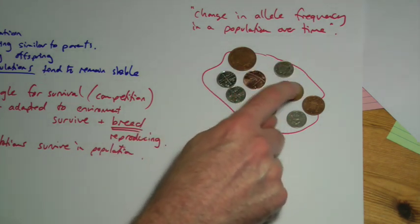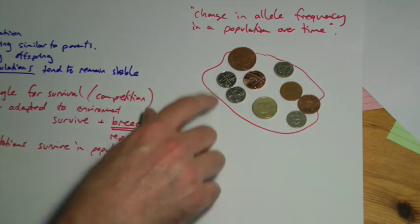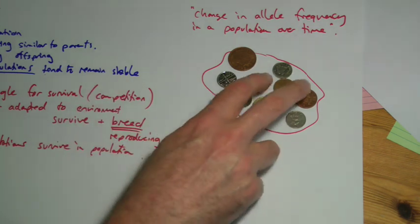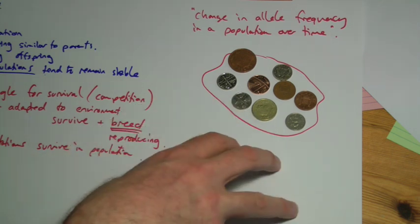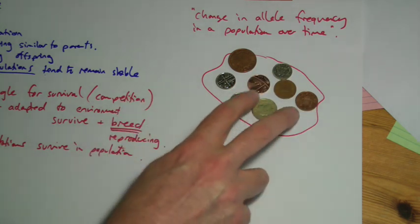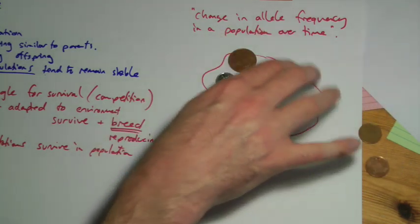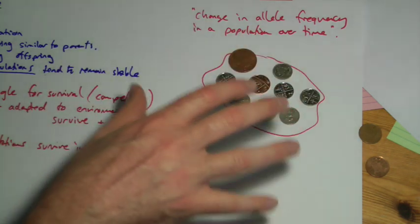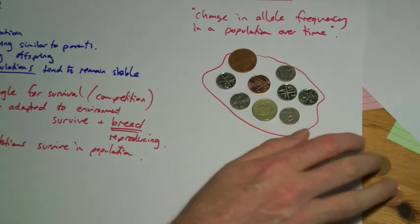Now, if for example one of these genes controls something like, well, let's use this idea of growing more hair. Perhaps these coins here represent an allele that represents being slightly hairy, and these ones represent alleles that are less hairy. And we have a change in our environment. Perhaps it becomes colder. Well, these alleles, for being hairy, are more likely to get passed on because they give you an advantage. Whereas these alleles are more likely to be removed from the gene pool because those animals with those alleles are dying out. So we might expect these ones to become more common within our population over time. So we've changed the frequency. There's more of them. And that's really what evolution is.